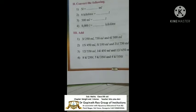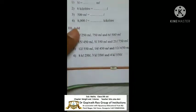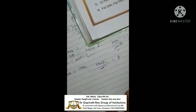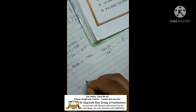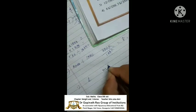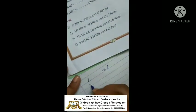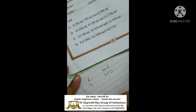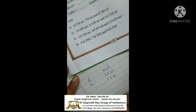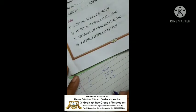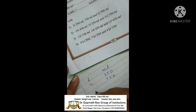First one: what is 3 liters 250 milliliters, plus 750 milliliters, and 6 liters 500 milliliters? You know that children, how to write this one. First, write the liters and milliliters columns. First one: 3 liters 250 milliliters. Second one: only milliliters given — 750 milliliters. Third one: 6 liters 400 milliliters.